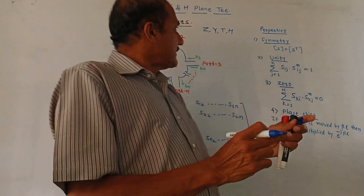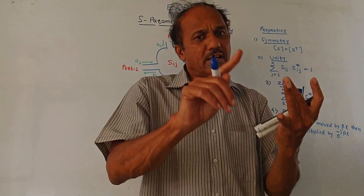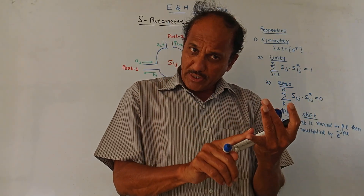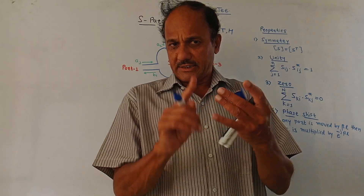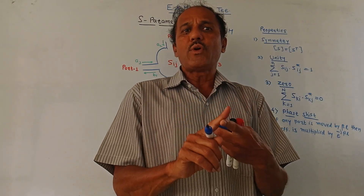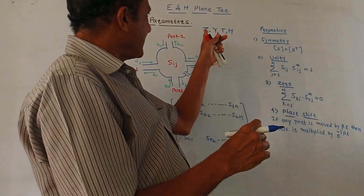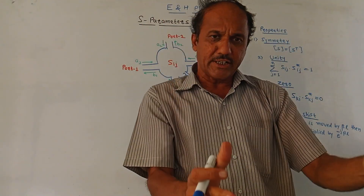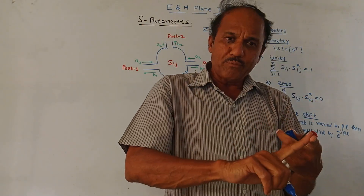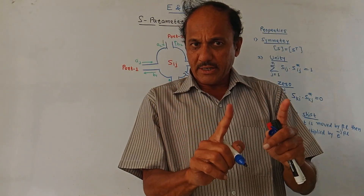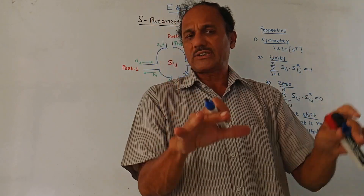The first reason is that for Z or Y parameters, or any other parameter, we are dealing with current and voltage. At microwave frequency, since the frequency is very high, it is difficult to measure voltage and current. The second reason is that while calculating Z or Y parameters, we need to either short circuit or open circuit the ports. At very high frequencies like microwave frequency, it is difficult to open or short circuit the terminals.